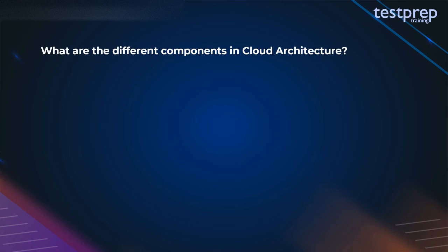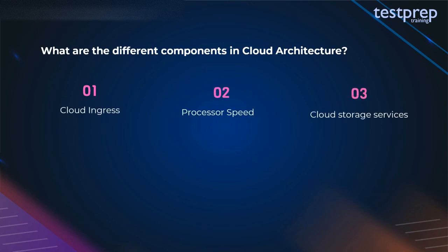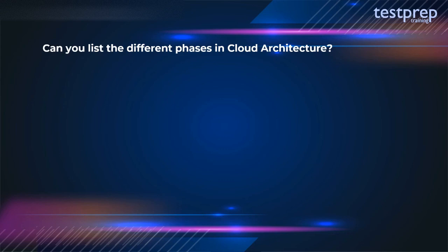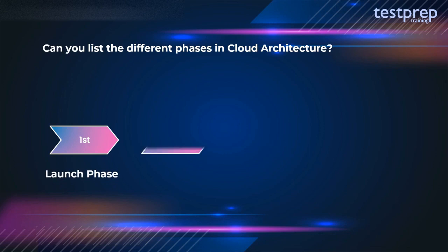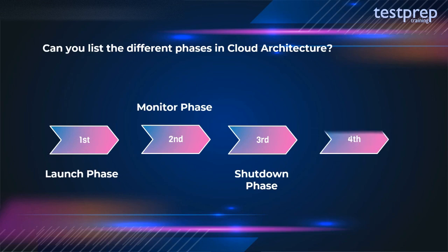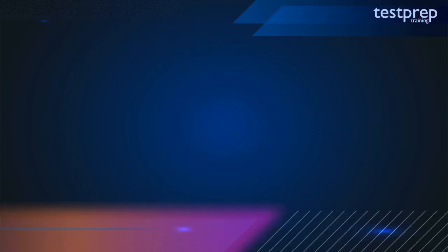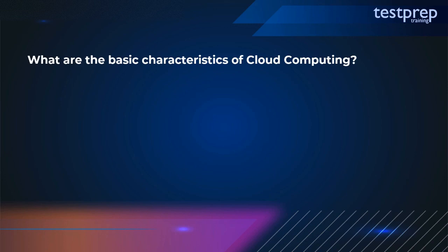Question 43: What are the different components in cloud architecture? The components include: first, cloud ingress; second, processor speed; third, cloud storage services; fourth, cloud-provided services; fifth, intracloud communications. Question 44: Can you list the different phases in cloud architecture? The different phases are: first, launch phase; second, monitor phase; third, shutdown phase; fourth, cleanup phase.